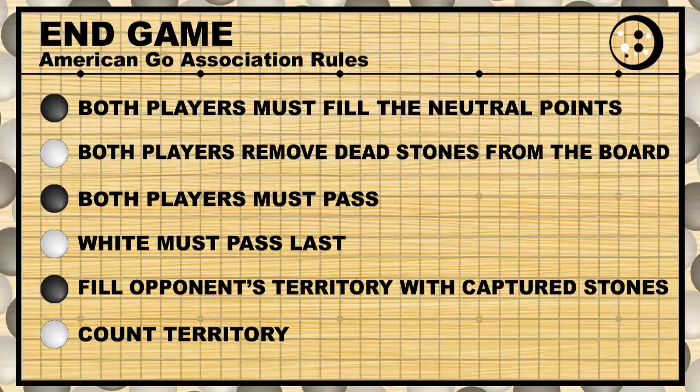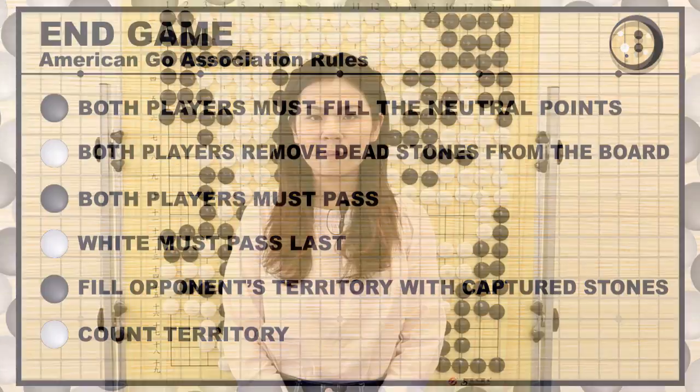This is how we finish the game and count the final score. Remember, according to AGA rules, we have to finish all the neutral points and white needs to pass last, and then you have to remove all the dead stones. If you have any more questions, you can go to our website or follow us on Facebook and Twitter. My name is Stephanie Yin, I will see you next time.